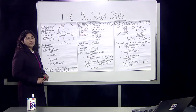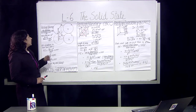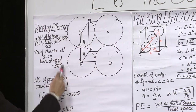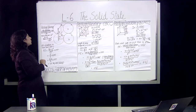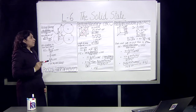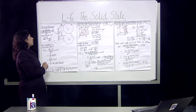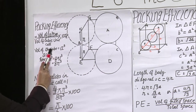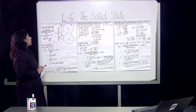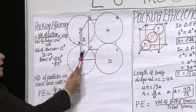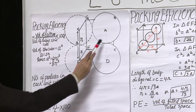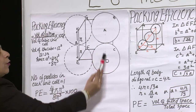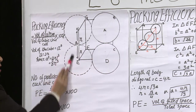Let us discuss packing efficiency for the simple cubic unit cell. Here you can see the cube, and the atoms are present on the corners — those are the lattice points. In the simple cubic cell, as we have already discussed, atoms are only at the corners; there are 8 corners and each atom is present there. Now, two atoms span the side A, covered by the radii of those two atoms.